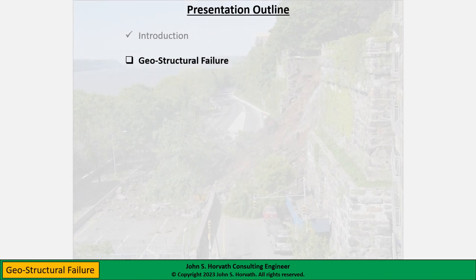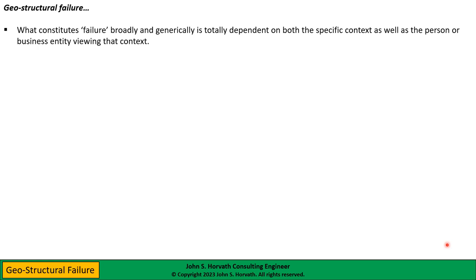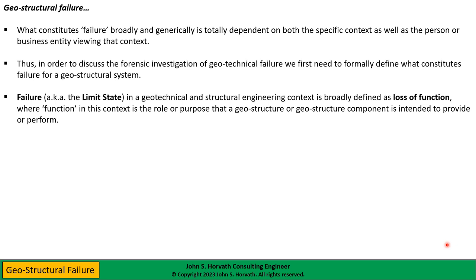The next topic I want to discuss is basic concepts of geostructural failure. What constitutes failure in a broad and generic context is totally dependent on both the specific context and the person or organization viewing that context. In order to discuss the forensic investigation of geotechnical failure, we first need to formally define what exactly constitutes failure for a geostructural system. Failure — which nowadays in civil engineering we refer to as the limit state — is broadly defined as the loss of function, where function is simply the role or purpose that a geostructure is intended to provide.